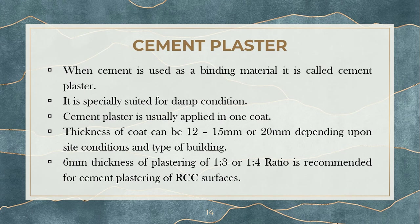Next comes cement plaster. Cement plaster is the plaster which uses cement as a binding material. So again, cement, sand, and water will make a cement plaster. It is the most widely used kind of plastering. It is also suited for damp conditions — all the requirements a good plaster should have are possessed by cement plaster, which is why it is widely used. The thickness of the plastering coat will be around 12 to 15 mm, sometimes 20 mm, depending upon the purpose and site conditions.